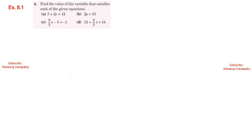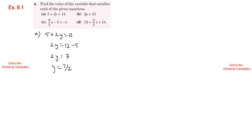Exercise 8.1, Sum number 4: Find the value of the variable that satisfies each of the given equations. Part a: 5 plus 2y equals 12. So 2y equals 12 minus 5, giving 2y equals 7. Therefore y equals 7 divided by 2, which is 3.5, or 7 by 2.